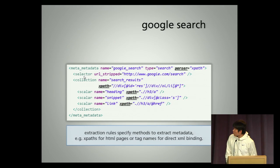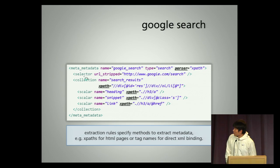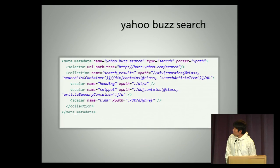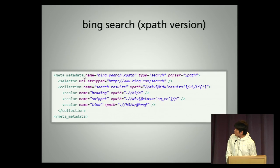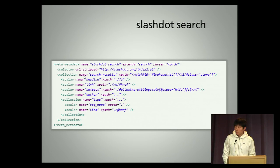We have extraction rules — here we use the XPath parser, but it's not limited to XPath. We also have PDF parser, HTML parser, and XML parser. This is a wrapper for Yahoo, Bing Search, and Slashdot Search. They are not very different from each other, except for different extraction rules.